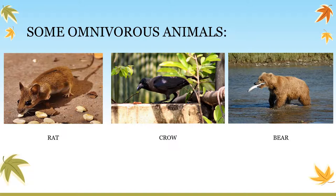Bear also eats insects sometimes and fishes, so it is an example of an omnivore animal. Generally, rats feed on grains and other foods, and sometimes leftover meat. Crow eats seeds or grains, fruits, small pieces of meat, and insects. So rat and crow are also examples of omnivore animals.